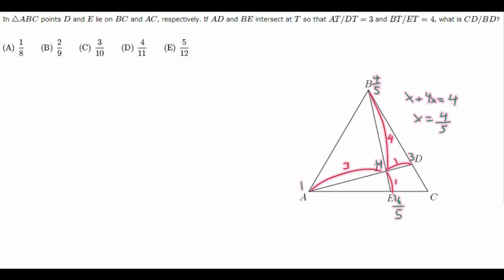And now we can find the weight of C by either subtracting 4 fifths from 3 or 1 from 16 over 5. So doing either of those calculations gives C having a weight of 11 over 5.